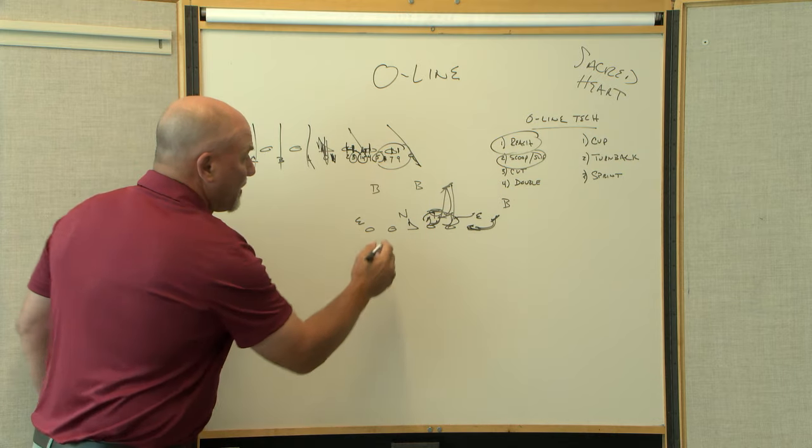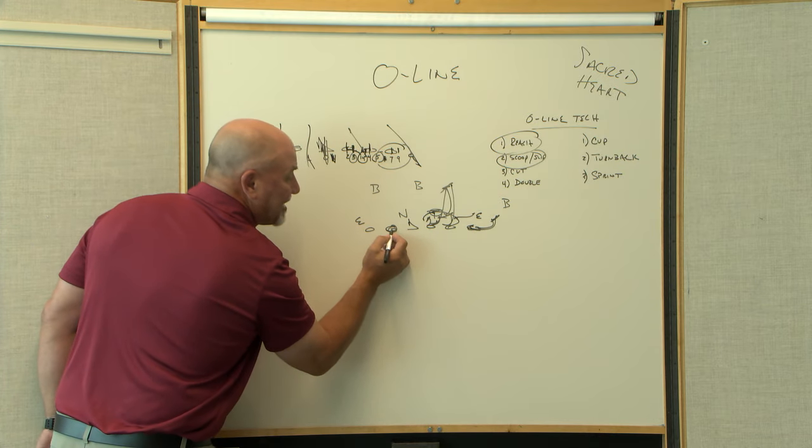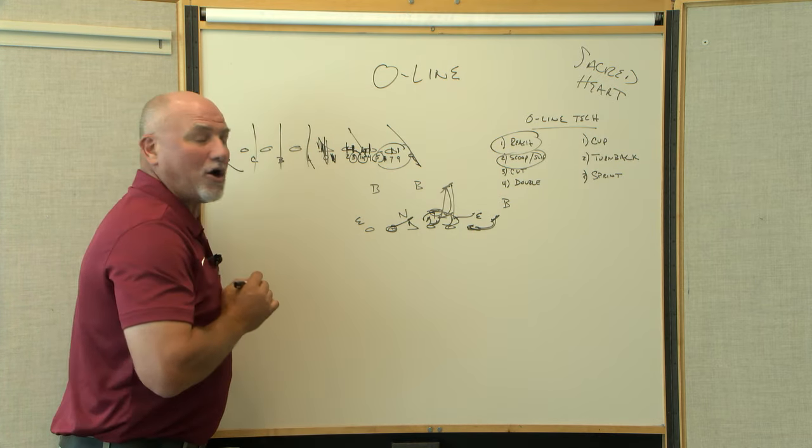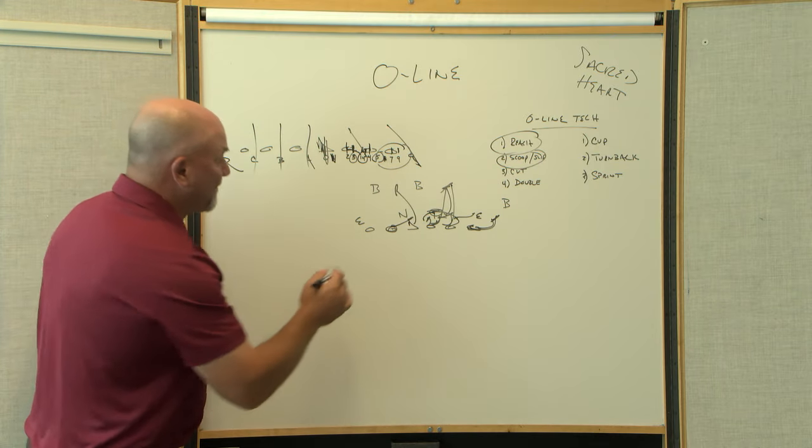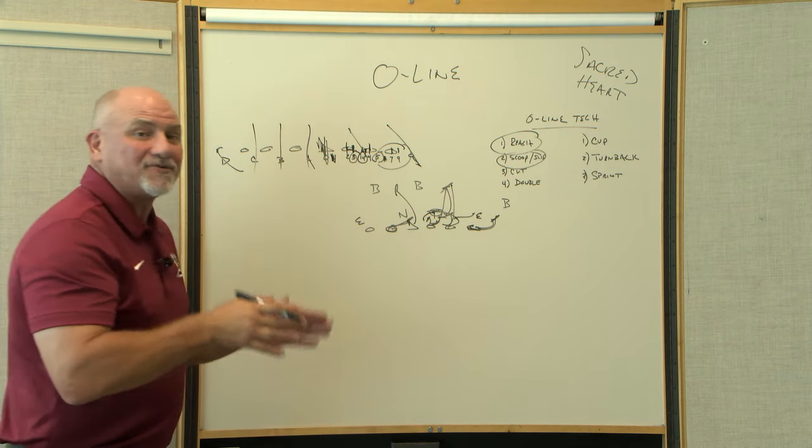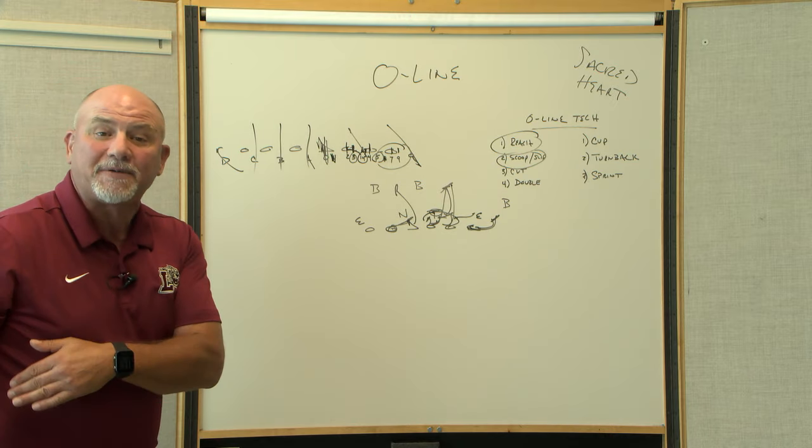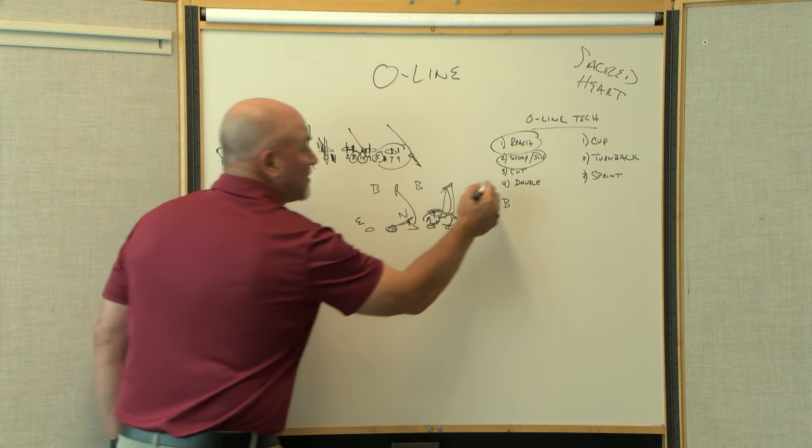A cut block on the backside—say we want this backside guard to cut off that nose guard so we can get the center up to the second level. That's a cut block. Sometimes on the interior, you can go low, but you've got to be careful you're not behind the legs. You get a penalty.